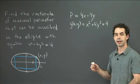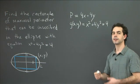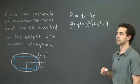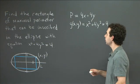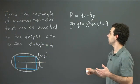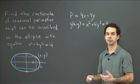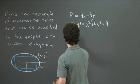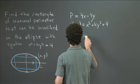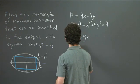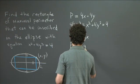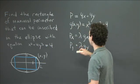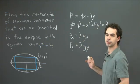We want to write down equations using Lagrange multipliers whose solutions correspond to the possible maximum points of p. We need the gradient of p to be parallel to the gradient of g. That means px equals lambda times gx, and py equals lambda times gy, for some value of lambda. Our third equation is the constraint equation that g equals 4.